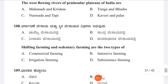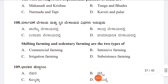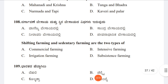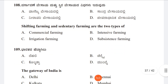Question 108: Shifting farming and sedentary farming are two types of Option A: Commercial flower farming, Option B: Intensive farming, Option C: Irrigation farming, Option D: Subsistence farming. The answer is Option D, Subsistence farming.